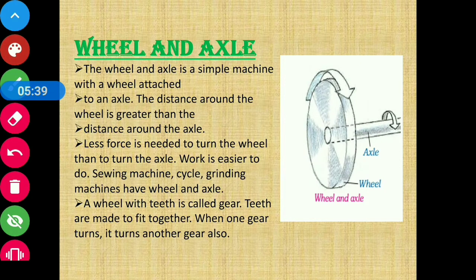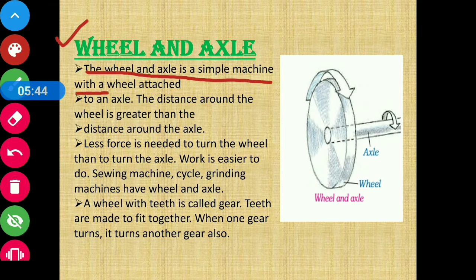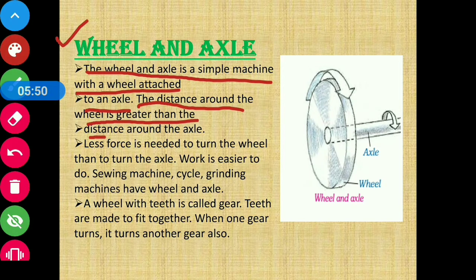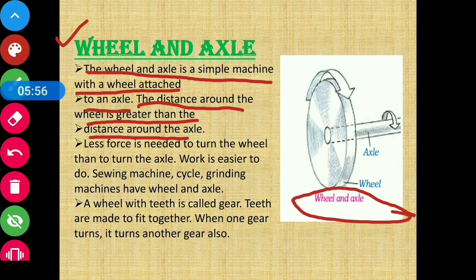Next is wheel and axle. The wheel and axle is a simple machine with a wheel attached to an axle. The distance around the wheel is greater than the distance around the axle. Wheel and axle mein ek rod-like structure hoti hai jise axle kaha jata hai, aur ek wheel hoti hai.